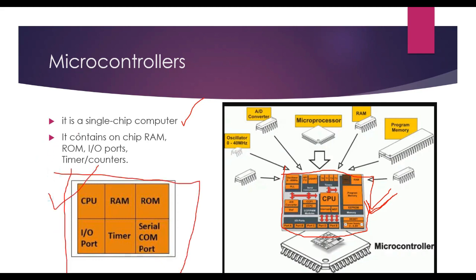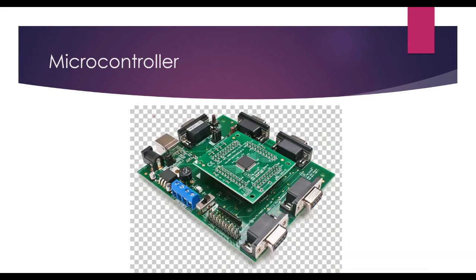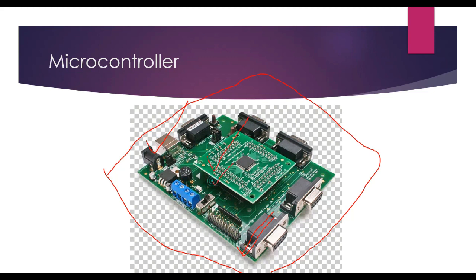Here is a general sketch: a microcontroller contains a CPU, RAM, ROM, serial port, timer, and IO port. It contains on-chip RAM, IO ports, timer and counter. Here is a real-time chip showing input port, output port, RAM, ROM, processor, timer, and IC — that is a microcontroller.